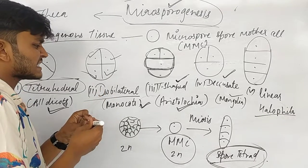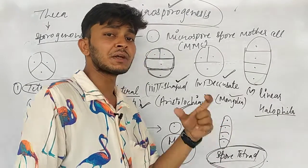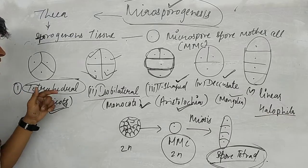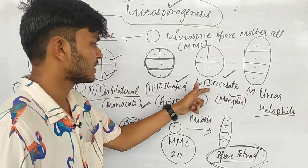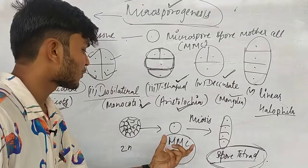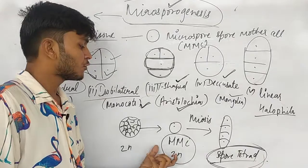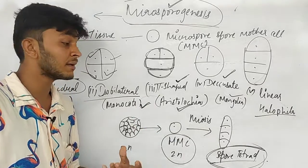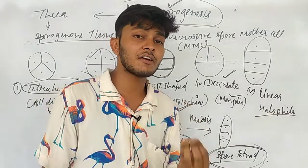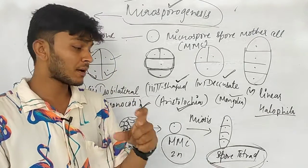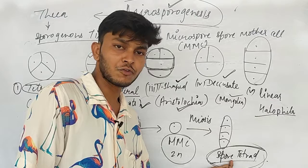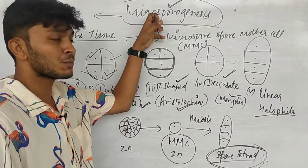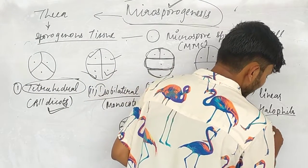So microspores in a spore tetrad have five kinds of arrangements: tetrahedral, iso-bilateral, T-shaped, decussate, and linear. To summarize: sporogenous tissue cells become enlarged and are named Microspore Mother Cells. These cells divide by meiotic division, and each cell forms a spore tetrad of microspores. This process — from Microspore Mother Cells to the spore tetrad — is known as Microsporogenesis.